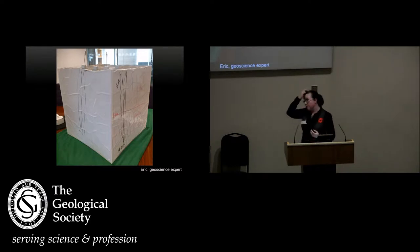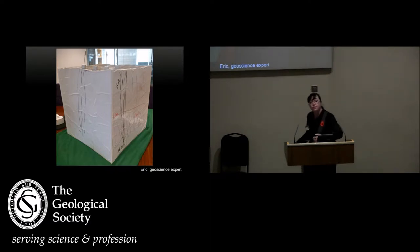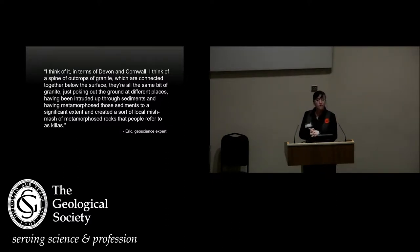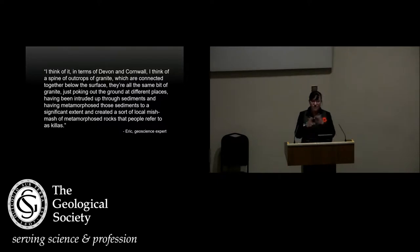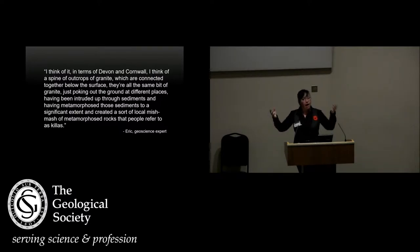When Eric started drawing the cube model, he started at the surface, looking for visual cues on the landscape and projecting those down into the subsurface. One of his quotes was: 'I think of it in terms of Devon and Cornwall — a spine of outcrops of granite connected below the surface, all the same bit of granite just poking out at different places, having been intruded up through sediments, creating a sort of local mishmash of metamorphosed rocks that people refer to as killas.' He was constantly bouncing between what you can visually see in the landscape and what exists underneath.